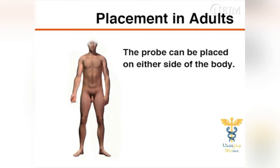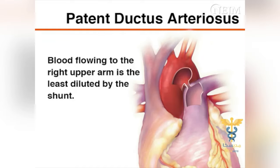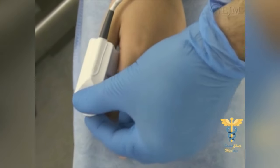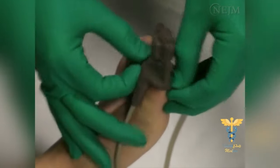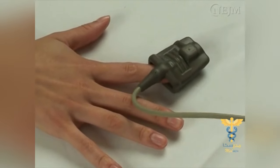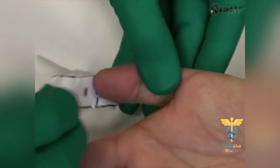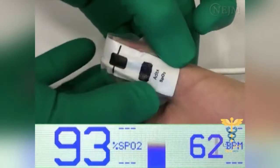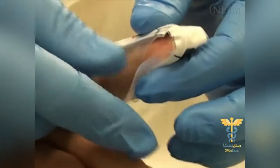In adults, the probe can be placed on either side of the body. In newborns, however, placement on the right upper arm is preferable because of the possibility of a patent ductus arteriosus. Blood flowing to the right upper arm is the least diluted by the shunt and is therefore the most oxygenated. It is important to choose a probe that is the right size for the patient. If the probe is not the right size, the light-emitting diodes may not line up correctly with the photodetector and will provide inaccurate data. Venous pulsations may occur if a probe is too small or is placed too tightly on the finger, resulting in a falsely low pulse oximeter reading. Pulse oximeter probes with adhesive sensors may minimize motion and may yield more accurate results than non-adhesive sensors.